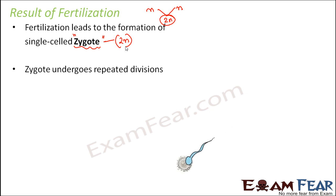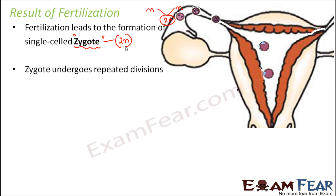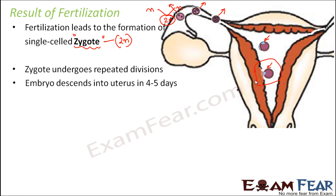The sperm and ovum fused to form a zygote in the ampulla, and gradually the zygote moves towards the uterus while simultaneously undergoing cell divisions — from one cell to two cells to more. Finally, when it enters the uterus, it gets attached to the uterine wall, and this attachment is known as implantation, which we will discuss in more detail. It takes around four to five days for the embryo to travel from the ampulla to the uterus.